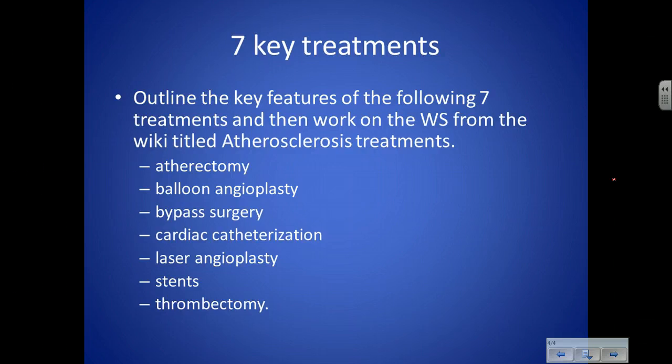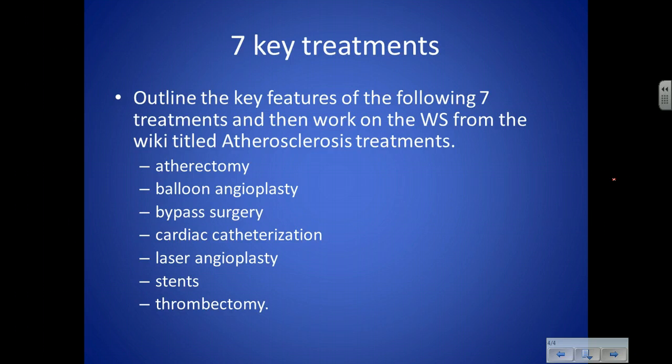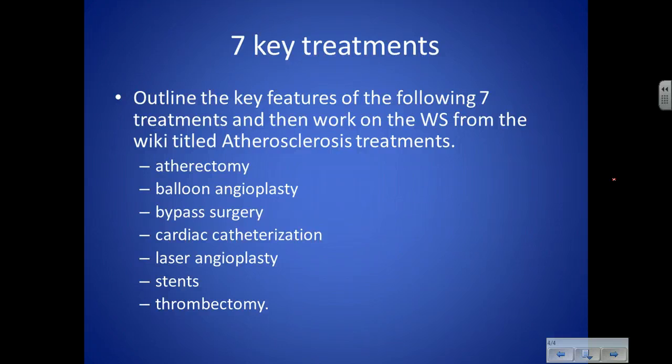There are seven treatments in total that you need to outline — use the internet and download the worksheet from the wiki. The seven treatments are: atherectomy, balloon angioplasty, bypass surgery, cardiac catheterization, laser angioplasty, stents, and thrombectomy. Make sure you clearly understand what atherosclerosis and plaque are, what they can result in — a flow chart might help — and how each of the seven treatments works. Good luck — see you in class.